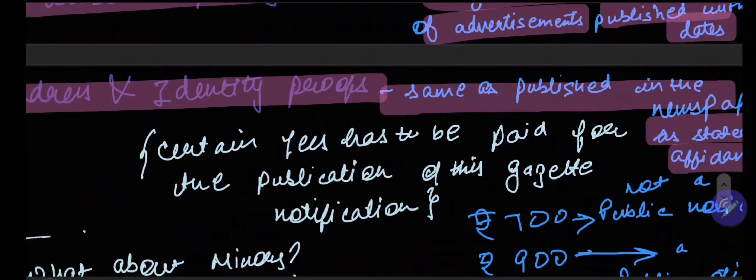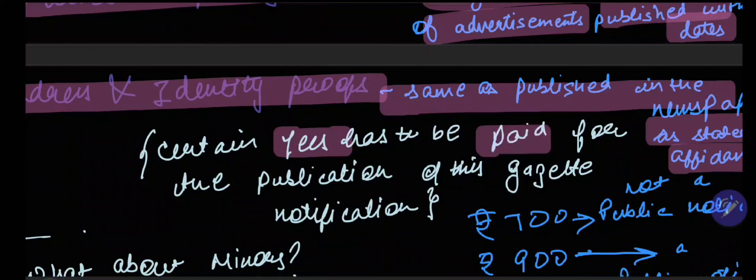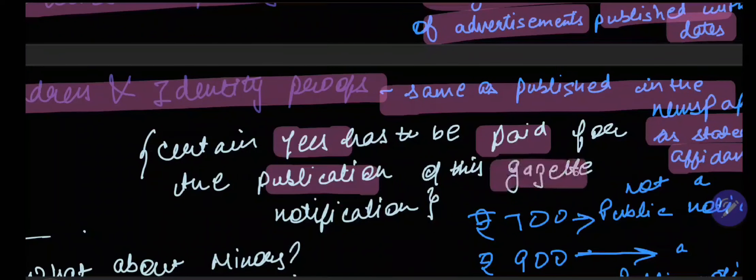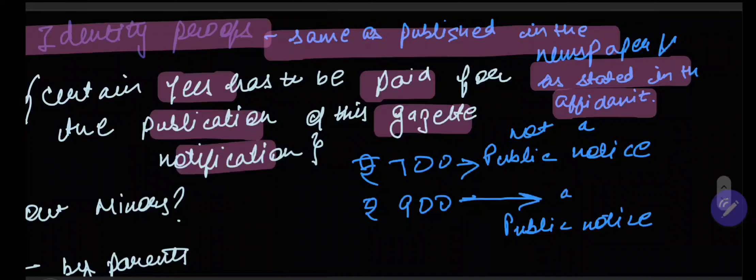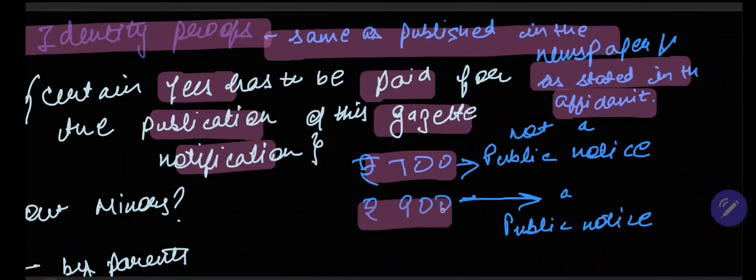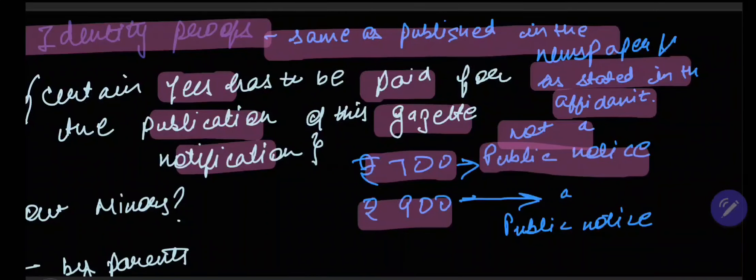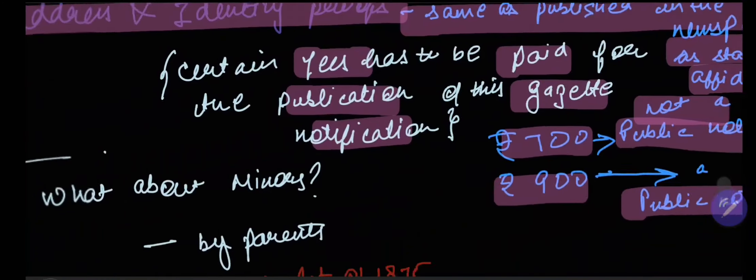There is a certain fees that needs to be paid for the publication of the Gazette Notification. The fees can be 700 or 900. 700 if you do not want notification to be a public notice and 900 if you want it to be a public notice.